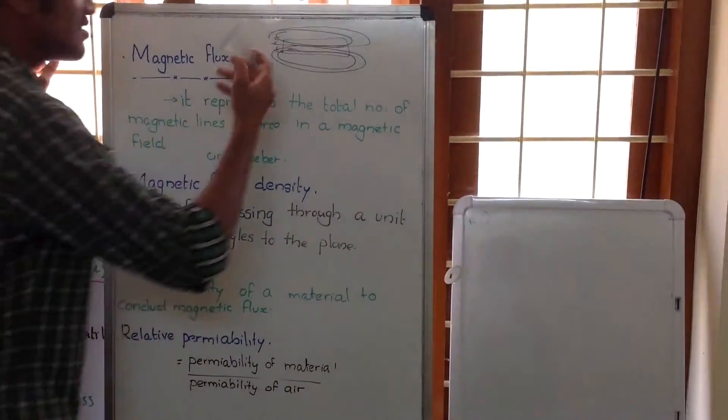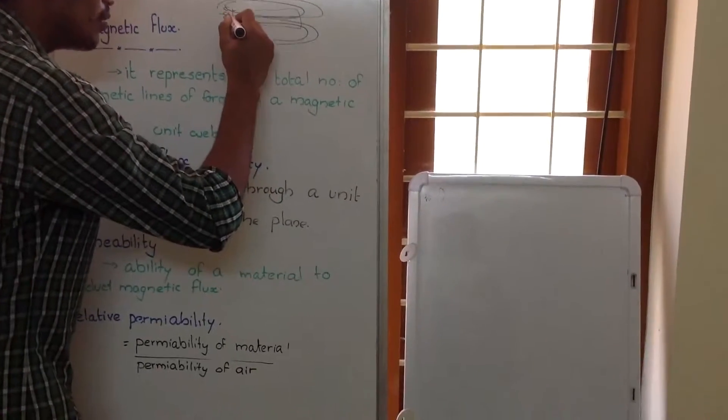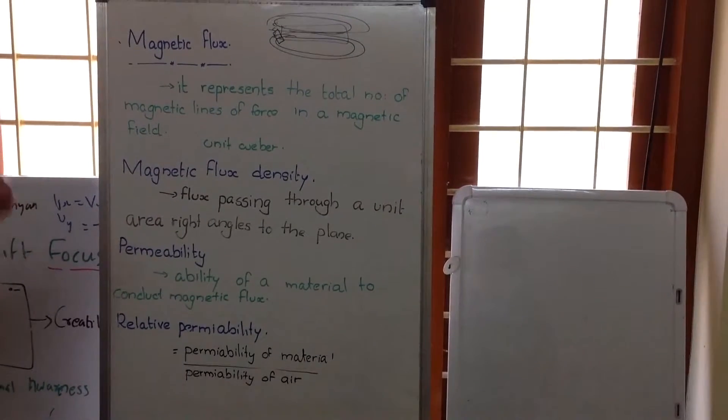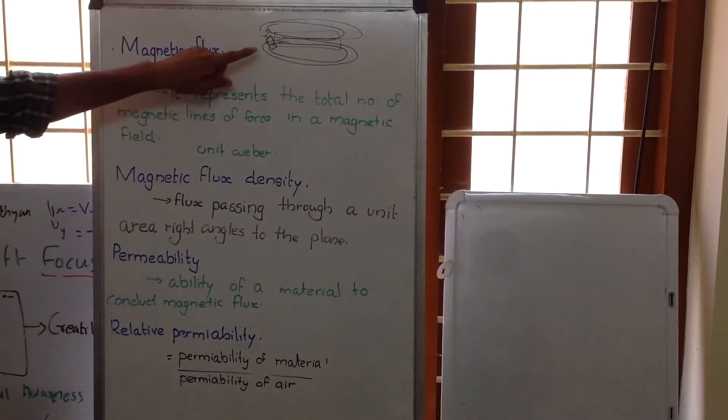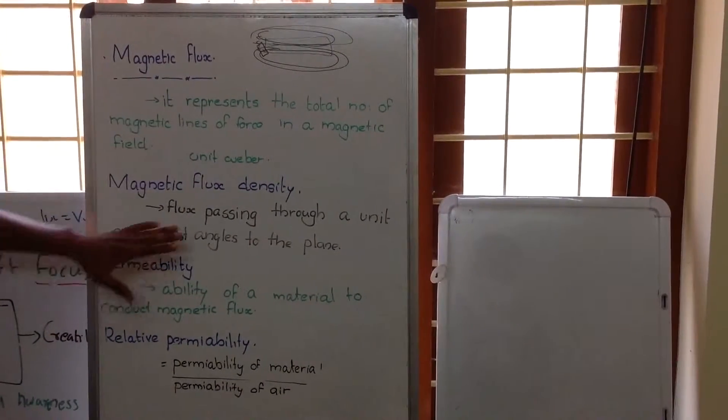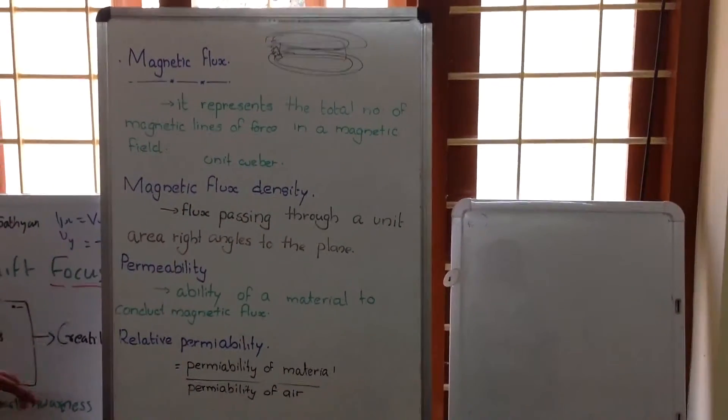Now, if we are considering a unit area here, then the number of flux lines or the flux passing through a unit area right angle to that plane can be called magnetic flux density.